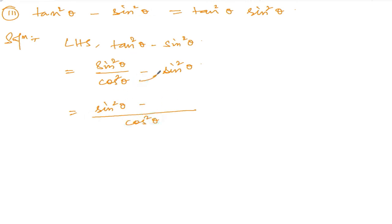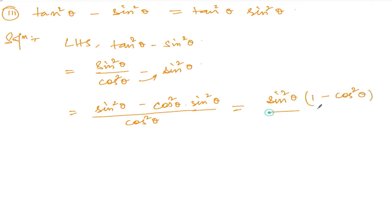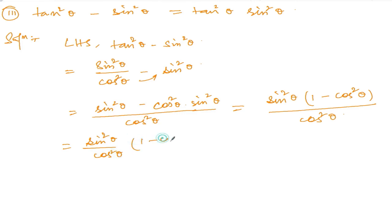Multiplying through, it becomes sine square theta minus cos square theta times sine square theta, all over cos square theta. I can take sine square theta as a common factor, giving sine square theta times (1 minus cos square theta), divided by cos square theta. That gives us sine square theta over cos square theta, which is tan square theta, multiplied by (1 minus cos square theta).